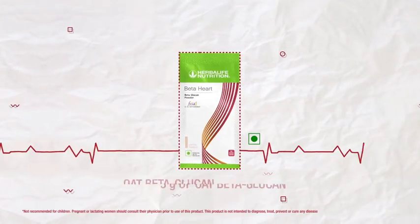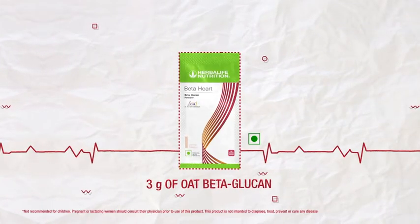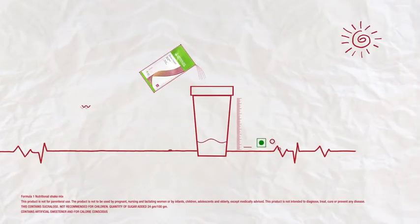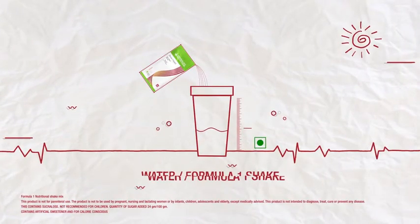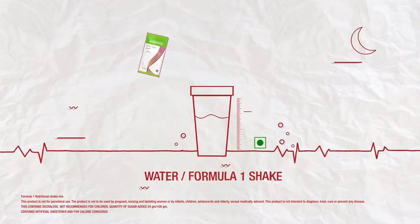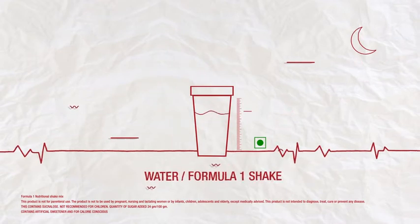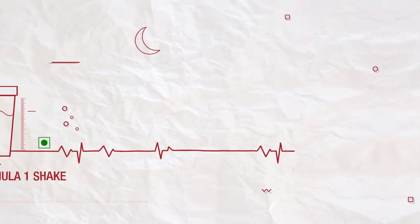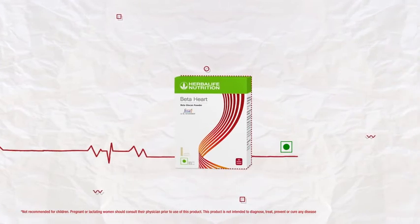Each serving of Beta Heart contains three grams of oat beta-glucan. Mix the contents of one sachet with 250 milliliters of water or Formula One shake of your choice and consume once daily.